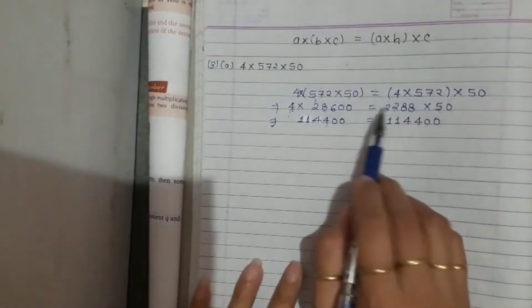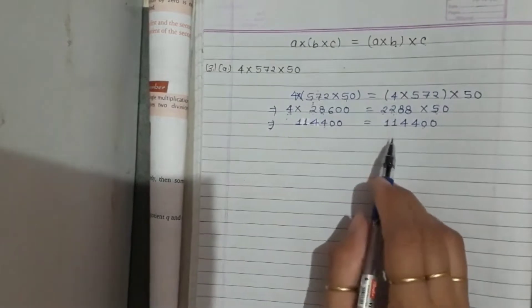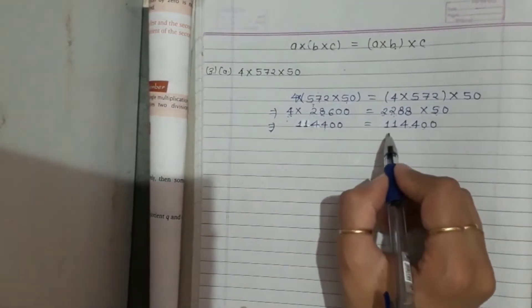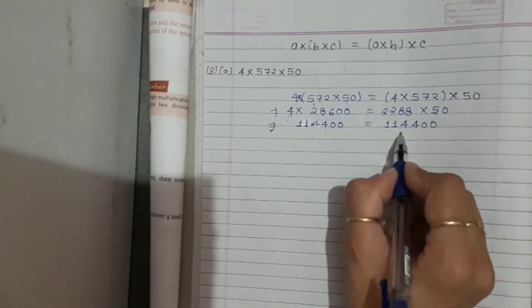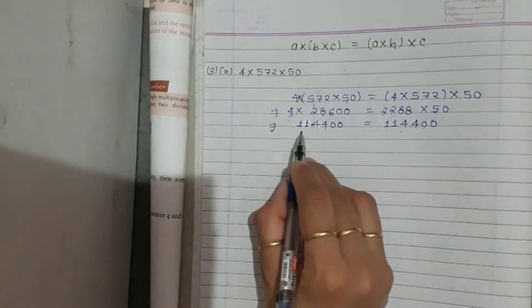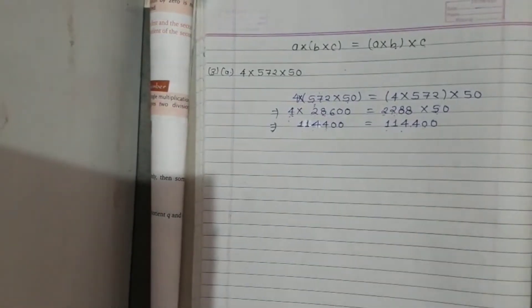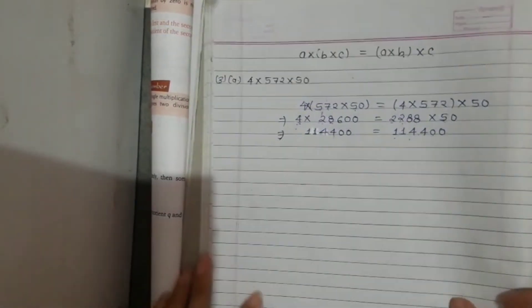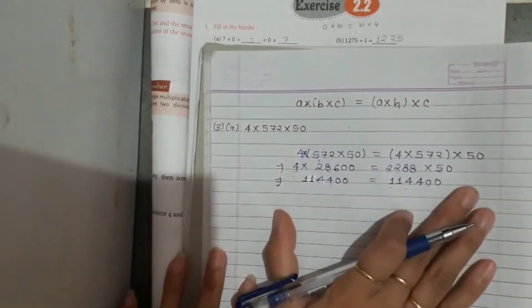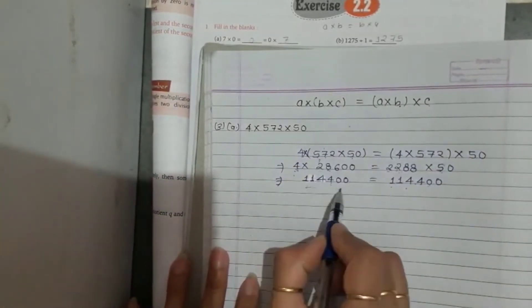Solving this, both sides give 1,14,400. Both answers are equal, that means this is your associative property verified and this is your product.